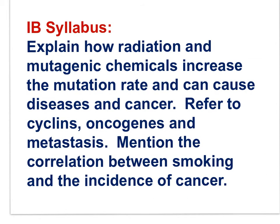As we've been examining the genetics of diseases resulting from DNA mutation, let's look at causes of mutation. The IB syllabus statement: explain how radiation and mutagenic chemicals increase the mutation rate and can cause diseases and cancer; refer to cyclins, oncogenes, and metastasis; mention the correlation between smoking and cancer. Cyclins are proteins that control cell division and prevent cells from dividing in an uncontrolled manner. If the DNA directing cyclin synthesis becomes mutated, cell division may no longer be controlled and cancer would be the result.